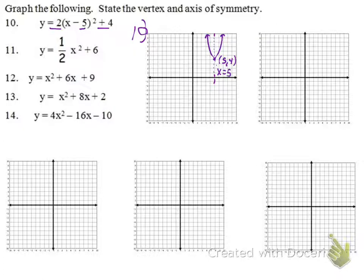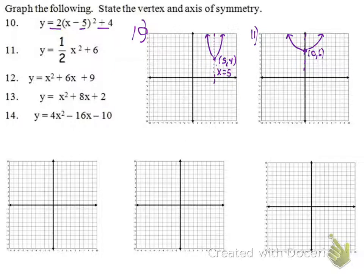For number 11, it follows the same idea — still in vertex form. Our vertex is 0, 6, so it's on the y-axis. Our coefficient out in front is 1 half, so it opens up and will be a little flatter. The axis of symmetry goes through there, so it's x equals 0.